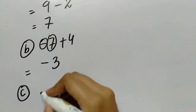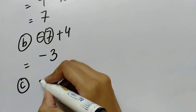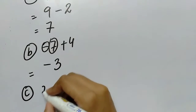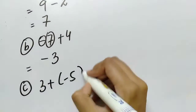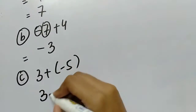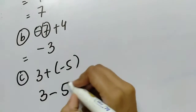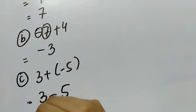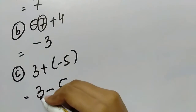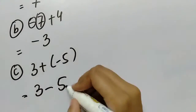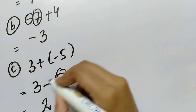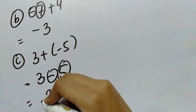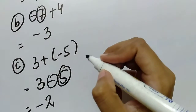Now C part. C part is 3 plus minus 5. So plus minus is minus, giving 3 minus 5. Now 3 minus 5 will be 2 and because the bigger sign has negative sign it will be minus 2.